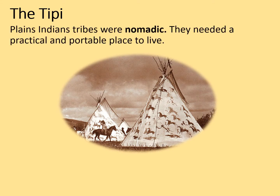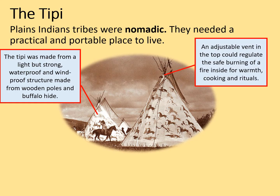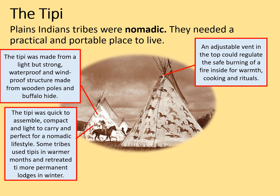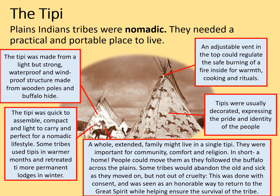The teepee. Plains Indian tribes were nomadic and needed a practical and portable place to live. The teepee was made from a light but strong, waterproof and windproof structure, made from wooden poles and buffalo hide. An adjustable vent at the top could regulate the safe burning of a fire inside for warmth, cooking and rituals. The teepee was quick to assemble, compact and light to carry, and perfect for a nomadic lifestyle. Some tribes used teepees in warmer months and retreated to more permanent lodges in winter. Teepees were usually decorated, expressing the pride and identity of the people. A whole extended family might live in a single teepee, which were important for community, comfort and religion.